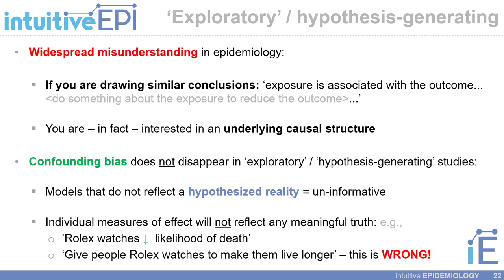In my view, there is a widespread misunderstanding in epidemiology when it comes to exploratory and hypothesis-generating studies. If you are drawing conclusions such as 'an exposure is associated with the outcome, therefore we should do something about the exposure in order to reduce the outcome,' you are in fact interested in an underlying causal structure. Confounding bias does not disappear in exploratory or hypothesis-generating studies, even if you have not informed your model with some sort of hypothesized reality or conceptual framework — referring to a diagram or directed acyclic graph that clearly labels the exposure, the outcome, and the potential confounding factors.